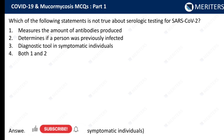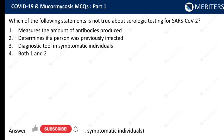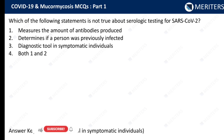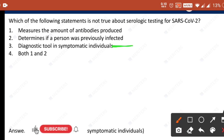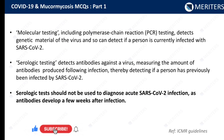Which of the following statements is not true about serologic testing for SARS-CoV-2? The options are: measures the amount of antibodies produced, determines if a person was previously infected, diagnostic tool in symptomatic individuals, or both A and B. The incorrect statement is 'diagnostic tool in symptomatic individuals.' Serologic tests should not be used to diagnose acute SARS-CoV-2 infection, as antibodies develop only a few weeks after the infection.